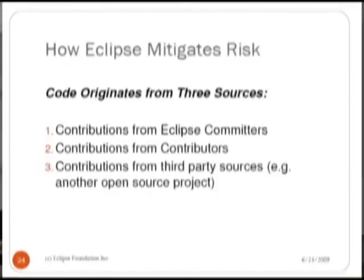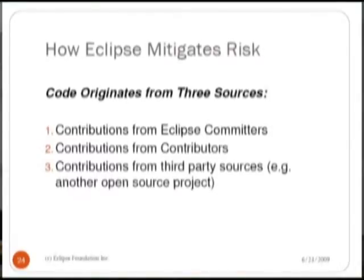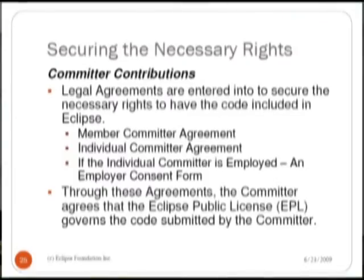What we do at Eclipse to mitigate our risk. Code that comes into Eclipse comes from three different sources: it comes from committers who establish their right to commit to our repositories based on meritocracy; it comes from contributors, individuals who may contribute a patch or a bug fix to the code base; and it also comes from third-party sources such as the Apache Software Foundation, SourceForge, and others.